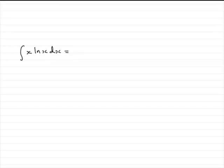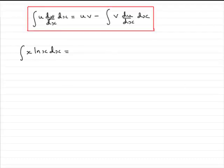So, what is integration by parts? Well, it's this formula here which we'll just bring up. The integral of u dv dx integrated with respect to x equals uv minus the integral of v du dx with respect to x.